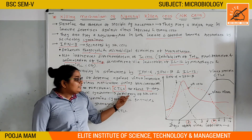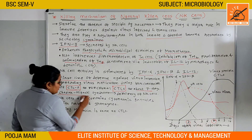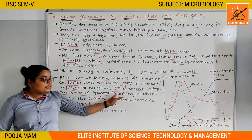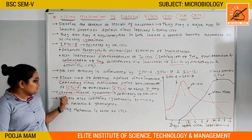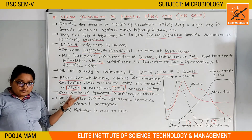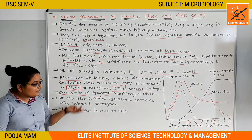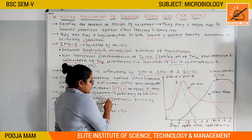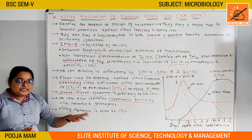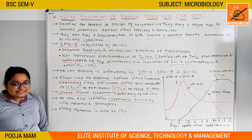The Chediak-Higashi syndrome is due to a deficiency of natural killer cells. It is a syndrome of immune deficiency. Natural killer cells also contain cytoplasmic granules.